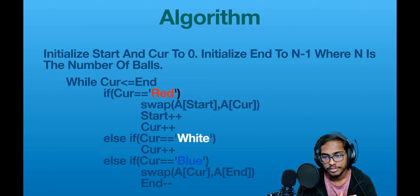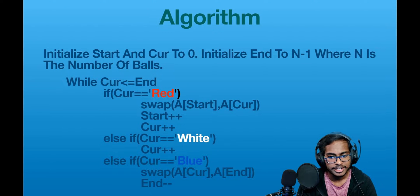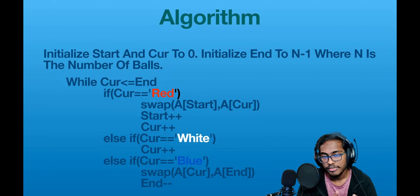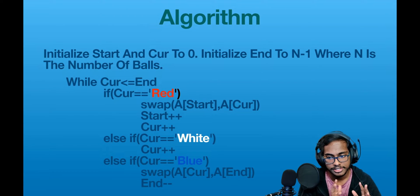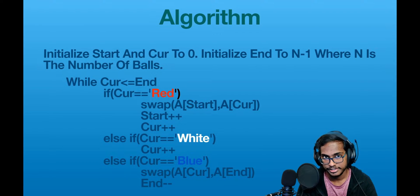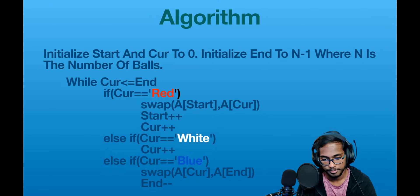Starting with the cut pointer, we keep incrementing it until cut is greater than end. If cut is pointing to a red ball — the first case — we swap the balls at the start index and the cut index, then increment both start and cut by one.